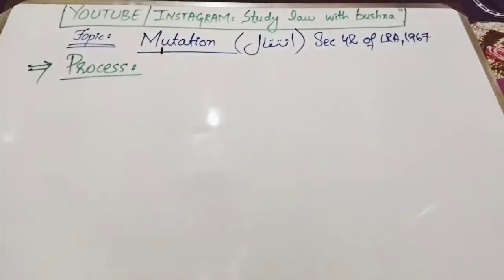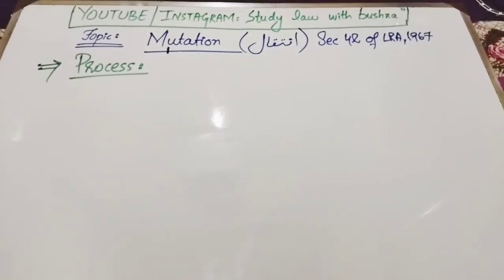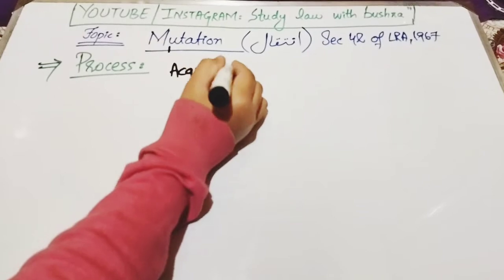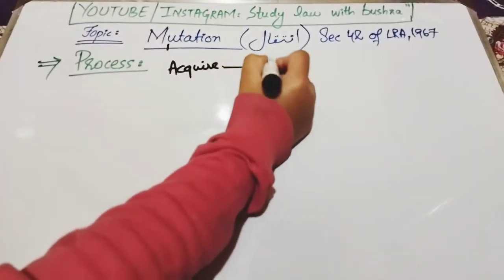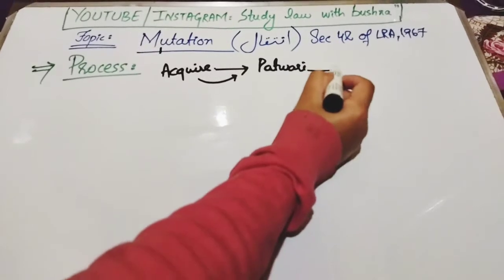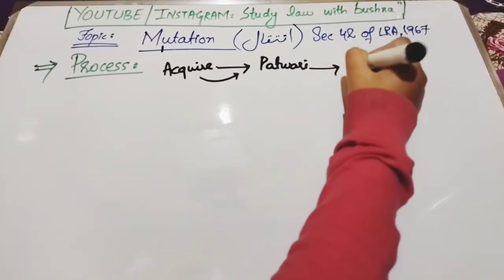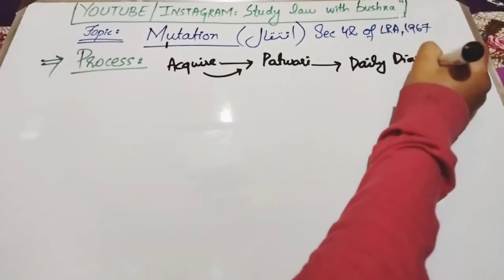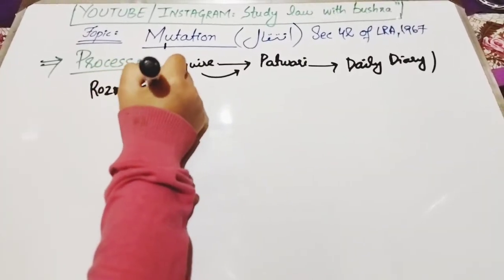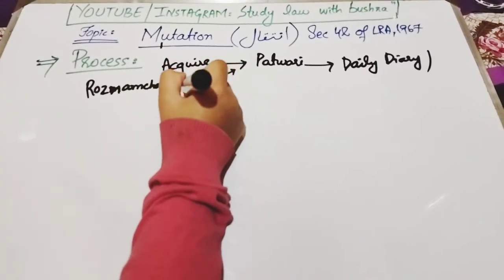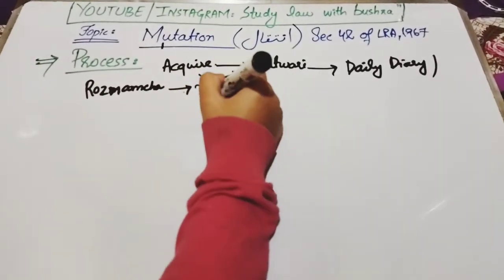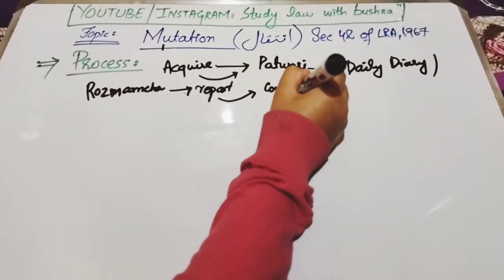Now the process of mutation: When a person acquires property in his name, he goes to the patwari and informs him within three months about the acquisition of the property. As soon as the patwari is informed, he prepares a report in his daily diary — roznamcha — within one week regarding that property acquisition. He then makes copies of this report and sends them to further authorities.